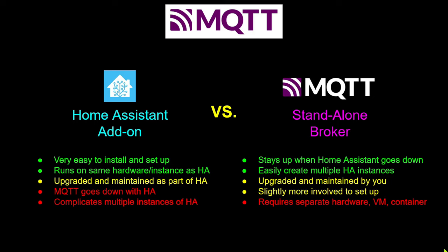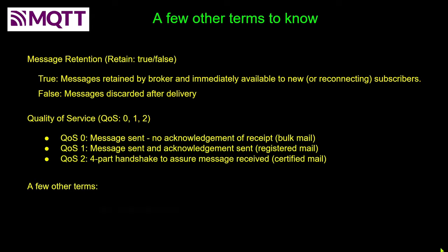There are a few other terms to be familiar with when starting out with MQTT. The most important is the retain flag. When you publish a message, you can set it to be retained or not. Improper use of this often leads to ghosting — where lights seem to turn themselves off or on at random, or devices seem to be acting on their own. There are also other concepts like quality of service, last will and testament, and keep alive, with plenty of online info available.